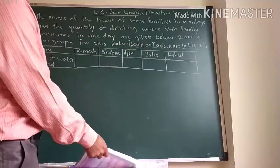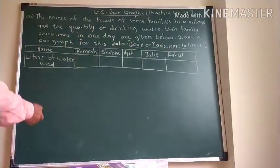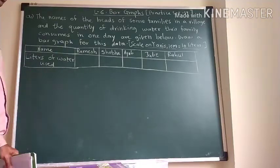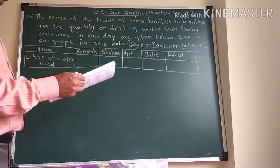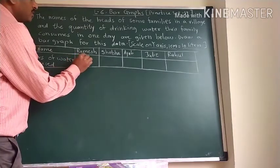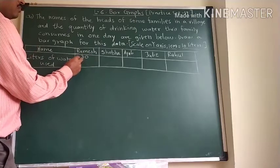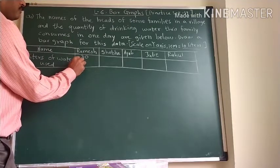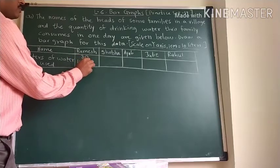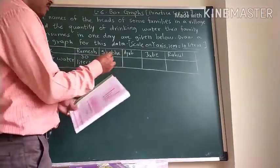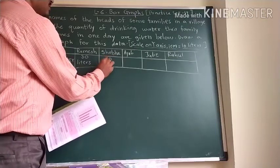These are the heads of the families and the liters of water their families are using or what they used. We can write by Ramesh family 30 liters of water they used. Shobha's family using 60 liters.